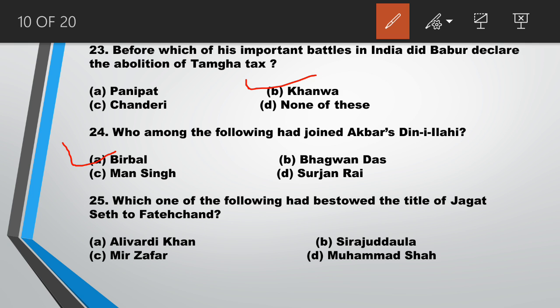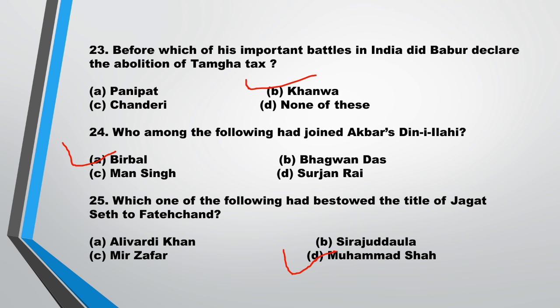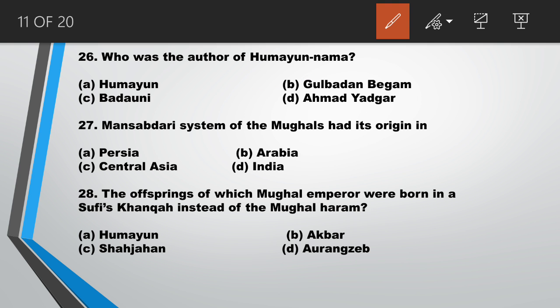Question number 25: which one of the following bestowed the title of Jagat Seth to Kemchand? Answer is Mahmud Shah, option D. Question number 26: who was the author of Humayunama? Answer is B, Gulbadan Begum. Question number 27: the Mansabdari system of the Mughals had its origin in answer C, Central Asia.